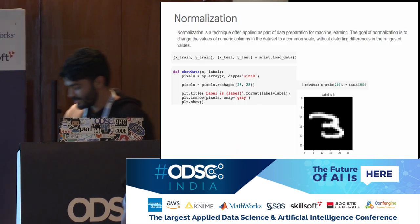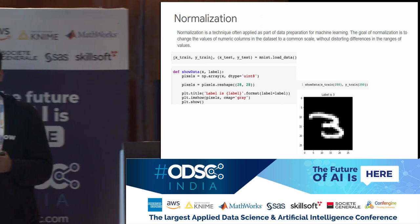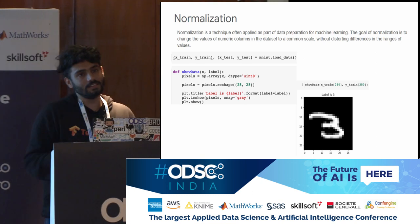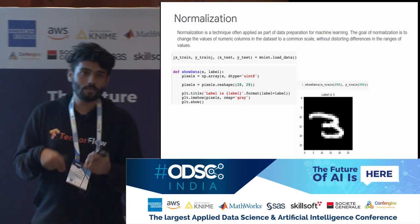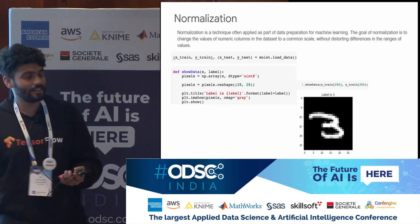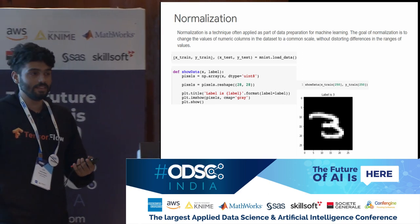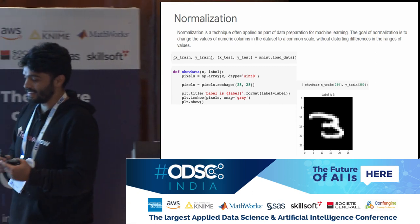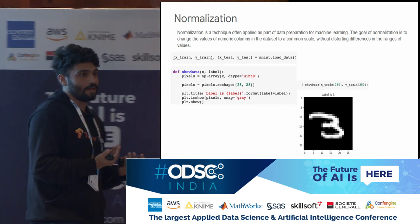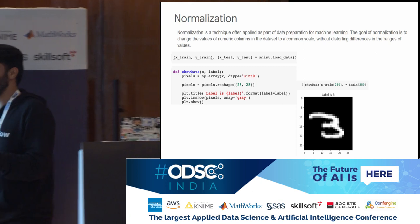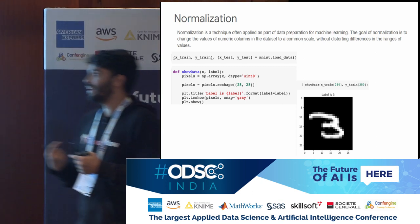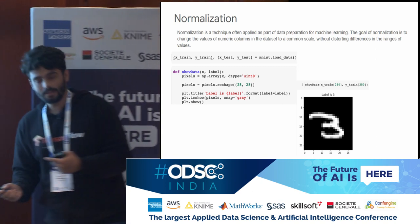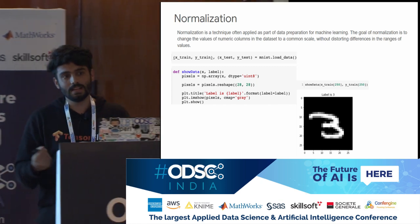The first technique is normalization — a very basic concept. Normalization means setting a range for your values, making sure they stay within a certain boundary. We're working on the MNIST dataset, the hello world of image data for machine learning. The data values range from 0 to 255, representing pixel intensity. A simple normalization divides the entire dataset by the maximum value, bringing the range to 0 to 1 with a mean of 0.5.